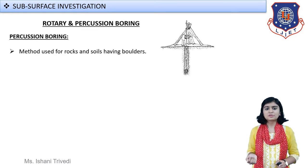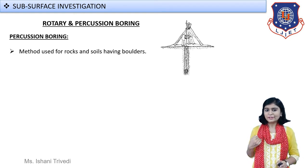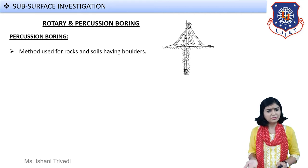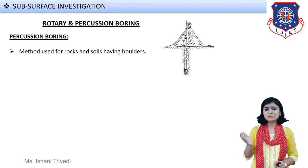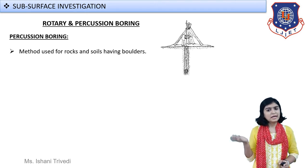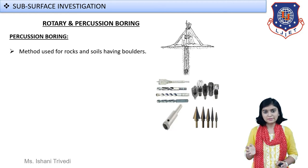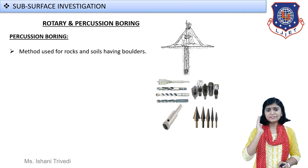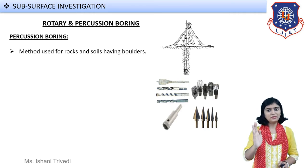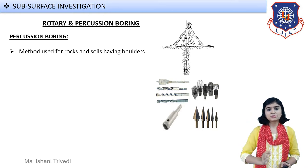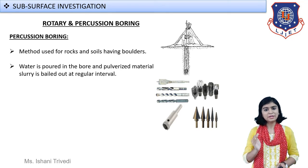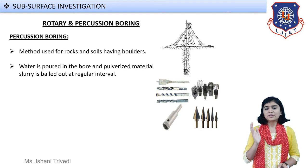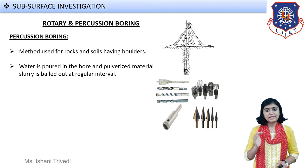Moving forward to rotary boring and percussion boring. These methods are used for soil containing boulders and gravel, or rocks and stone. Until now we were discussing medium to soft soil, clay soil, and cohesive soil. But if you are dealing with soil that contains rocks and boulders, or for horizontal boring or tunnel boring, you will need a drilling process. Such boring — whether performed vertically or horizontally — is either rotary boring or percussion boring.